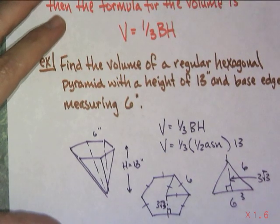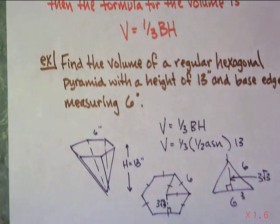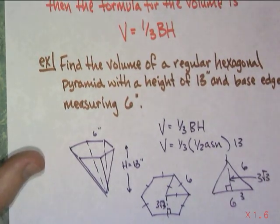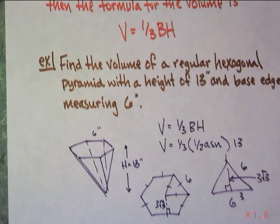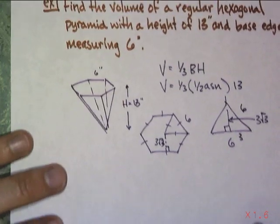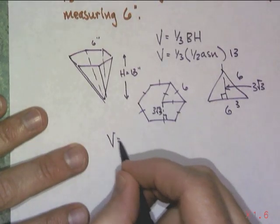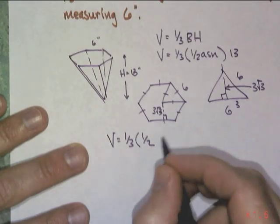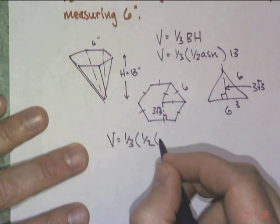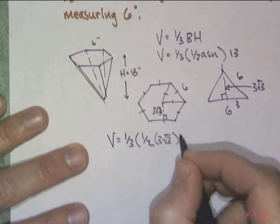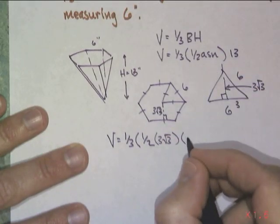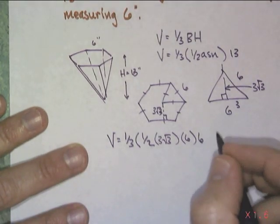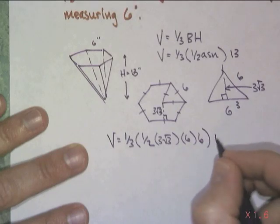Now, I think I have all the information I need. I've got the apothem. I've got a side length. And I have the number of sides. So, this is a good time to show our work and to write down everything. So, volume is equal to one-third times one-half. Apothem of three root three. Side length of six. Number of sides, in this case, is also six. And the height is thirteen.